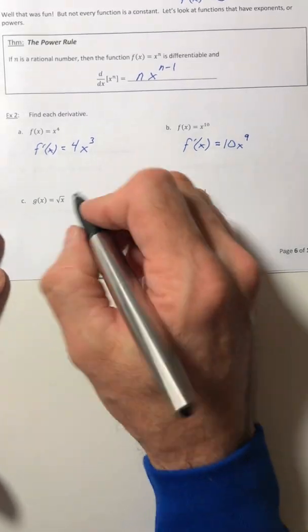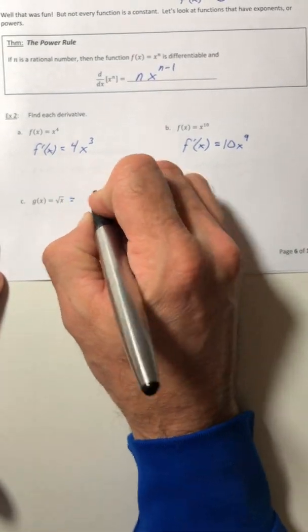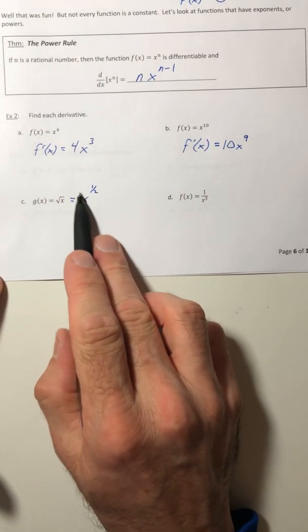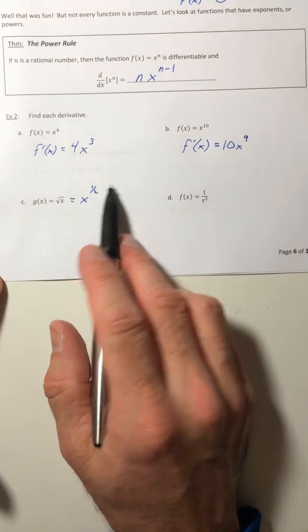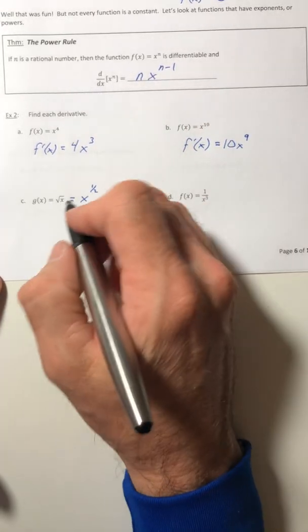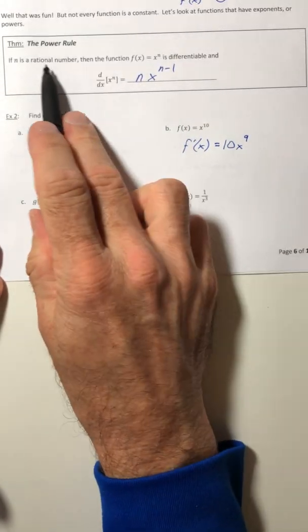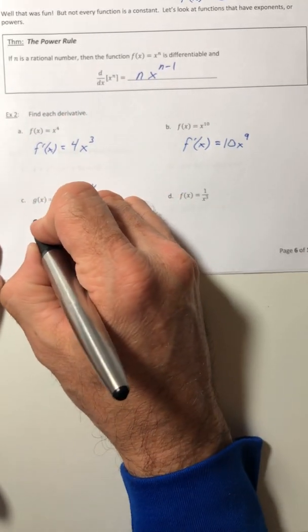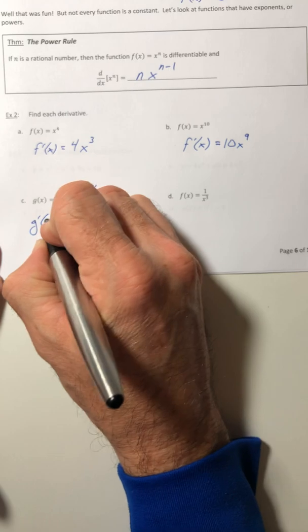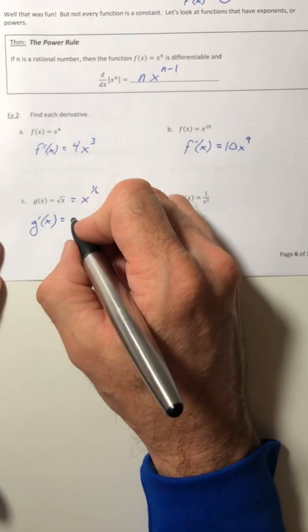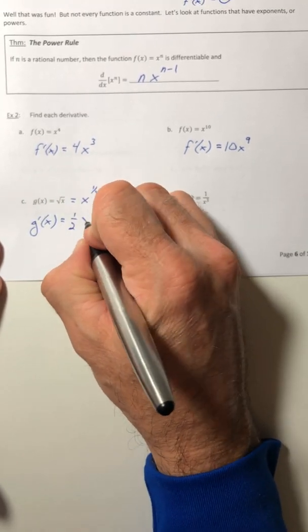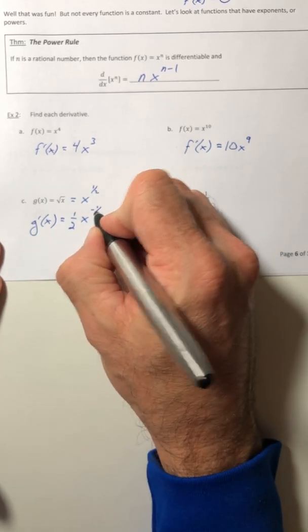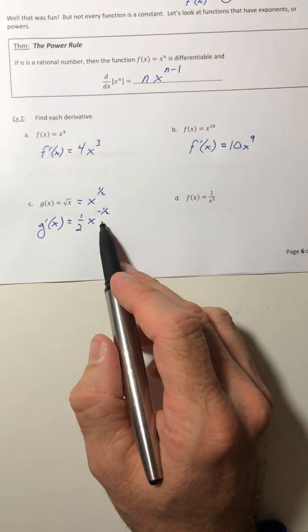All right, part c, this can be rewritten as x to the half. Well, it's got a power on it now, so now you can still use the power rule, even though it's not a whole number. It doesn't say it had to be a whole number, it just has to be rational, and one-half definitely is. So pull the power down, decrease the exponent by one, so it's one-half x to the negative one-half.